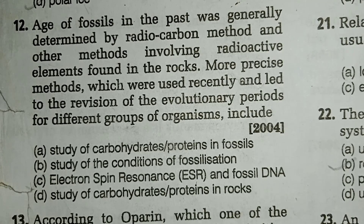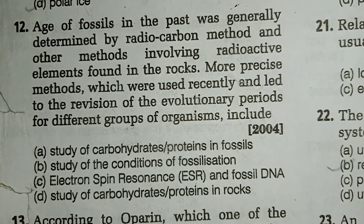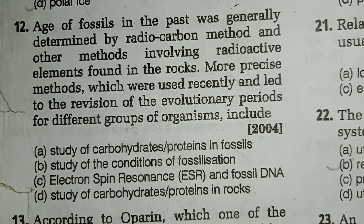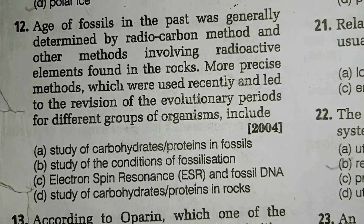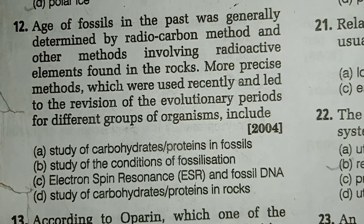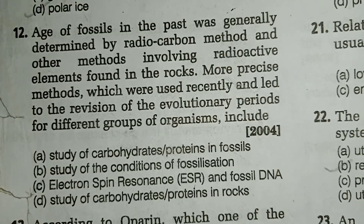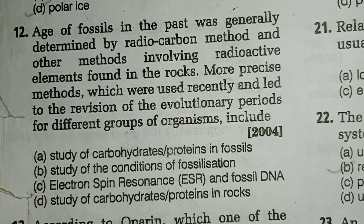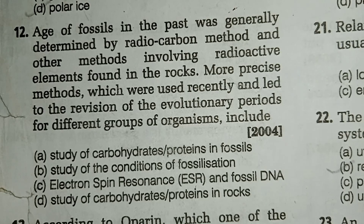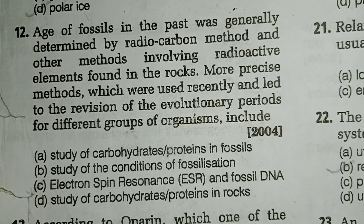More precise methods used recently, which led to the division of evolutionary periods for different groups of organisms — the answer for question 12, option C, is correct: electron spin resonance and fossil DNA.